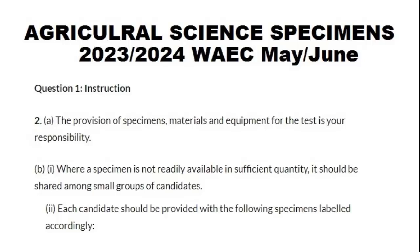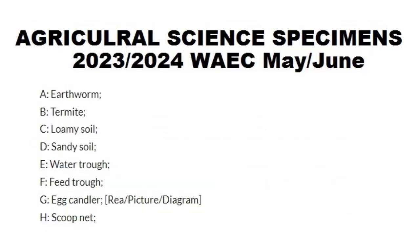There is an instruction you can see on the screen here. Number one is instructions — that one is not for you. Number two is the provision of assessment materials and equipment for the test — that is the school's responsibility, not yours. Where a specimen is not readily available in sufficient quantity, it should be shared among small groups of candidates. Each candidate should be provided with the following specimens, labeled accordingly.